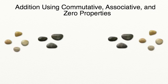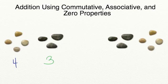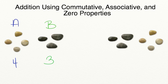Let's begin our lesson today adding using the commutative property. The commutative property tells us that it doesn't matter the order of the numbers you're adding — you'll still get the same sum at the end. Let's start with this group of rocks. We have four yellow rocks and three gray rocks. We're going to use the variable A for the yellow rocks and B for the gray rocks. Remember, a variable is a letter that you use to replace a number in a formula.